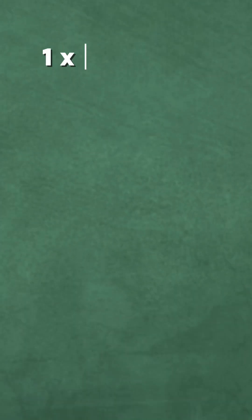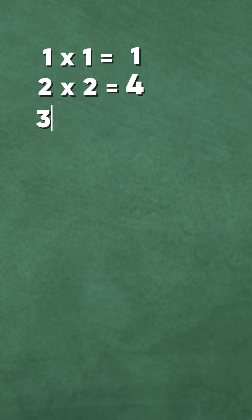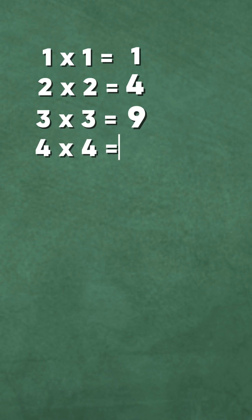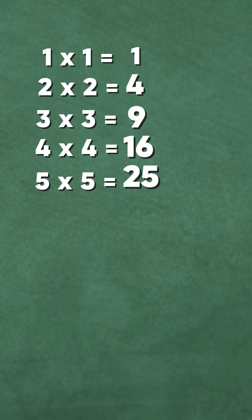1 times 1 is equal to 1. 2 times 2 is equal to 4. 3 times 3 is equal to 9. 4 times 4 is equal to 16. 5 times 5 is equal to 25.